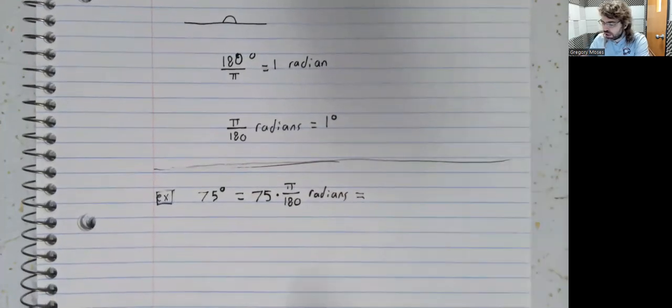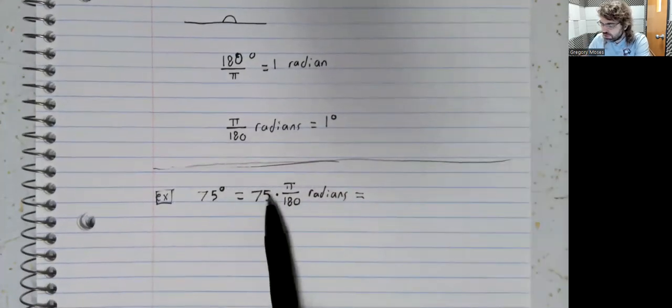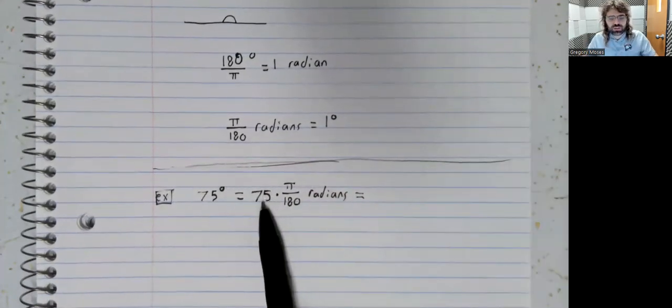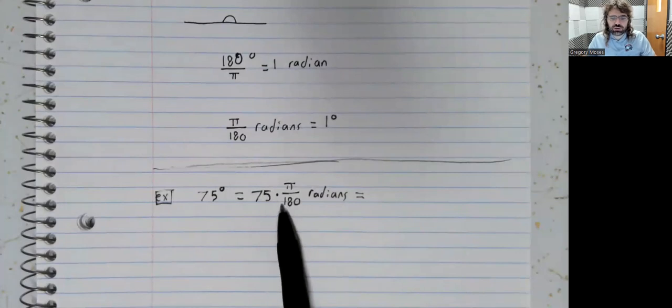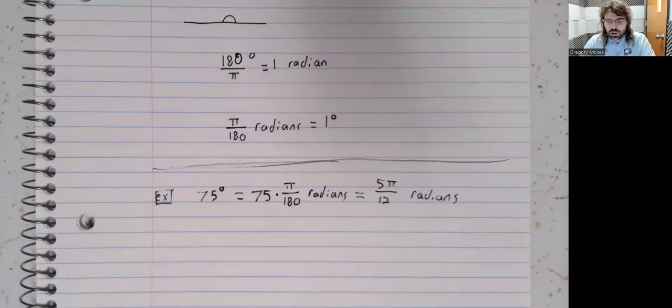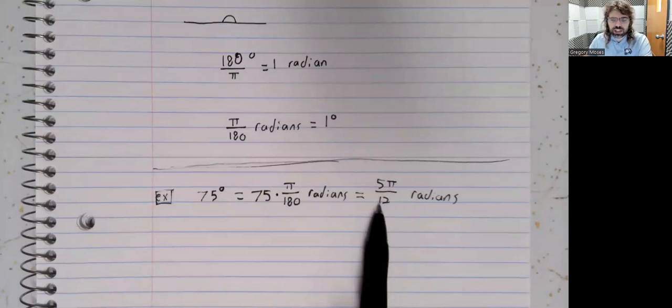This simplifies a little - 5 goes into both 75 and 180. When the dust clears, you wind up with 5 pi over 12 radians.